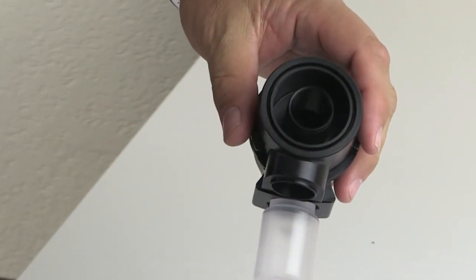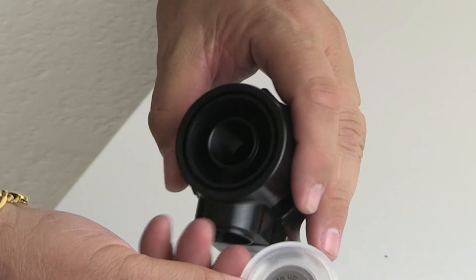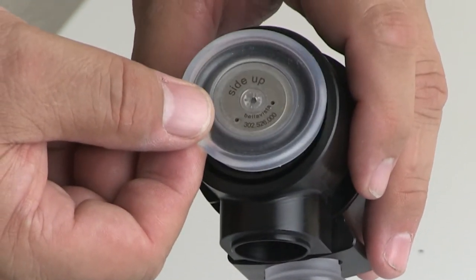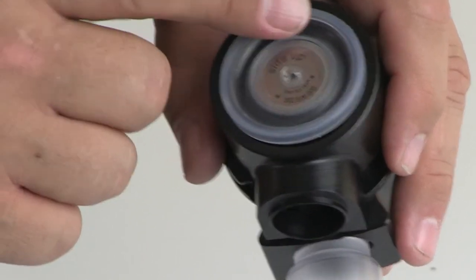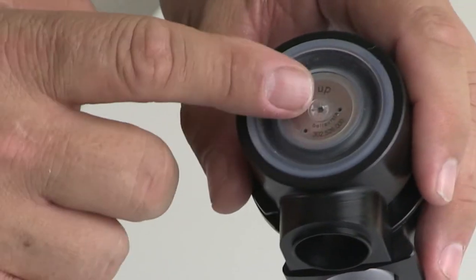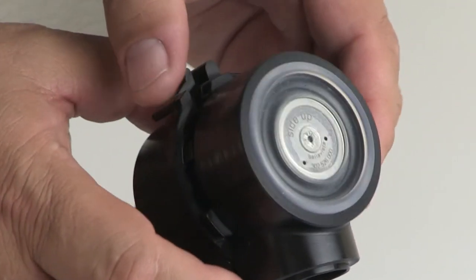Last but not least, I will assemble the diaphragm. You see the side up label on there? The side up label corresponds to the side up that I'm looking at now. So this has a bezel that you just fit into the valve, and now your valve is ready for assembly again.